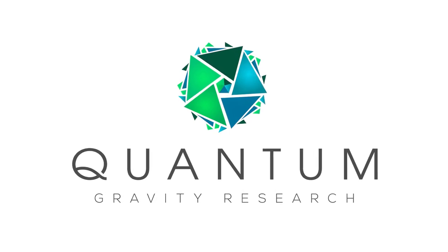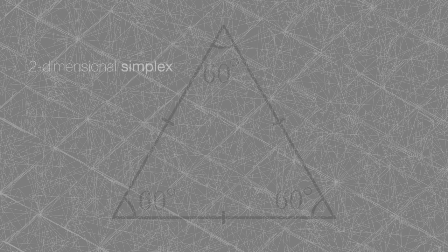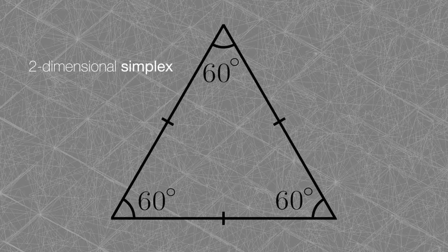The simplest building block in geometry is always the simplex. For example, the two-dimensional simplex is the equilateral triangle.